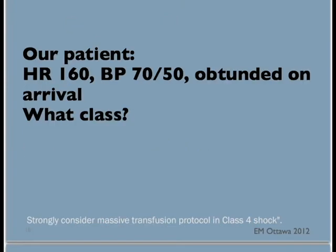Let's go back to our patient. His vital signs after the breathing assessment are as follows: heart rate of 160, blood pressure of 70 over 50, and he was obtunded on arrival. What class of shock would he be in? As you can see, his heart rate is high, blood pressure is low, and there is also a true decreased level of consciousness. He would be in class 4 shock, and would need fluids and blood.